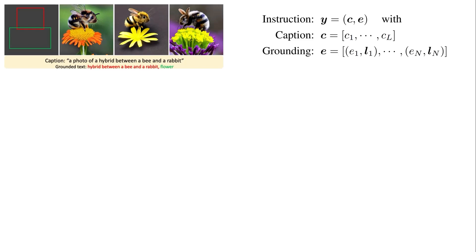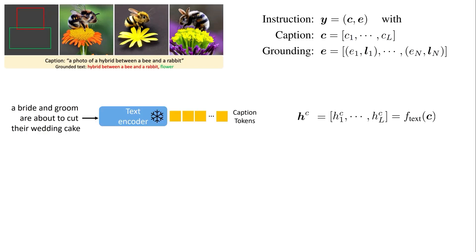In addition, we have E, which is the grounding. For grounding, we say how many objects do we have — in general, N objects, but in our example we have two bounding boxes, so two groundings. Each grounding is represented by a vector E, which is the text like 'a hybrid between a bee and a rabbit,' and also L, which is the bounding box. For creating the caption tokens, we do exactly as in stable diffusion — we pass the caption into a CLIP text encoder and it generates caption tokens.